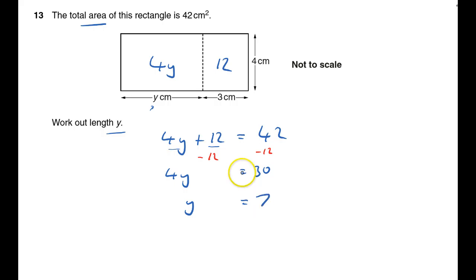Divide by 4... 30 divided by 2 is 15, half of 15 is 7.5. So 7.5 is the answer. And that's question 13 done.